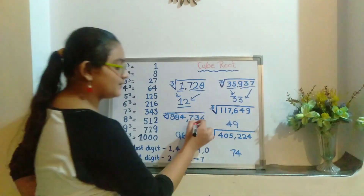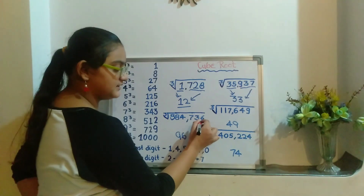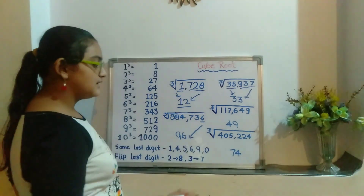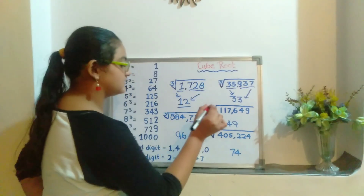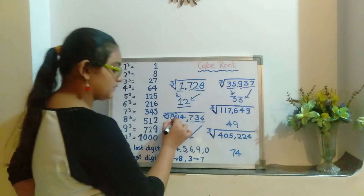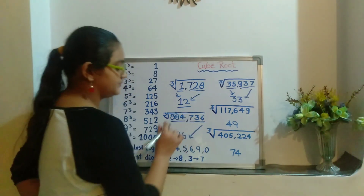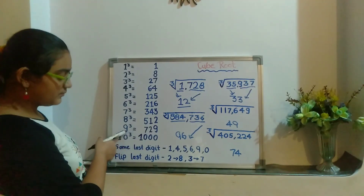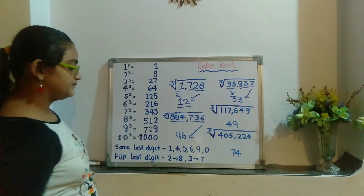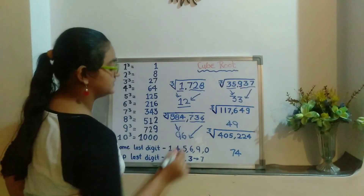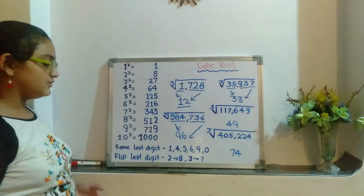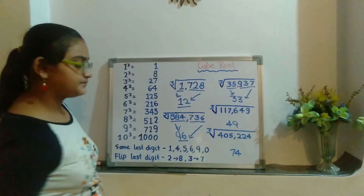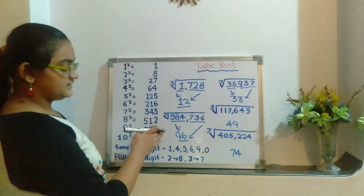In this next question, the last digit is 6, which is the same as 6, so we will write 6 here. Now we will ignore the last 3 digits and concentrate on the leftover digit which is 884, which is greater than the cube of 9, which is 729. So we will write 9 here. The answer for this is 96.